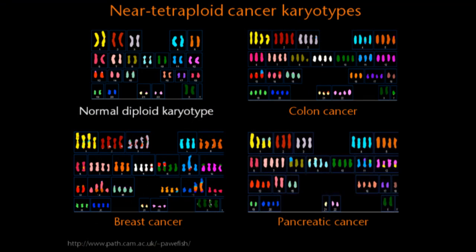It has long been known that human cancers often show an abnormal chromosome number, and this aneuploidy is thought to be an important aspect of the genome instability in human cancer. Human cancers often show karyotypes in which some chromosomes are present at four copies, suggesting that an early step towards the formation of an aneuploid cell is a tetraploid cell with double the chromosome number that then loses chromosomes during tumorigenesis.